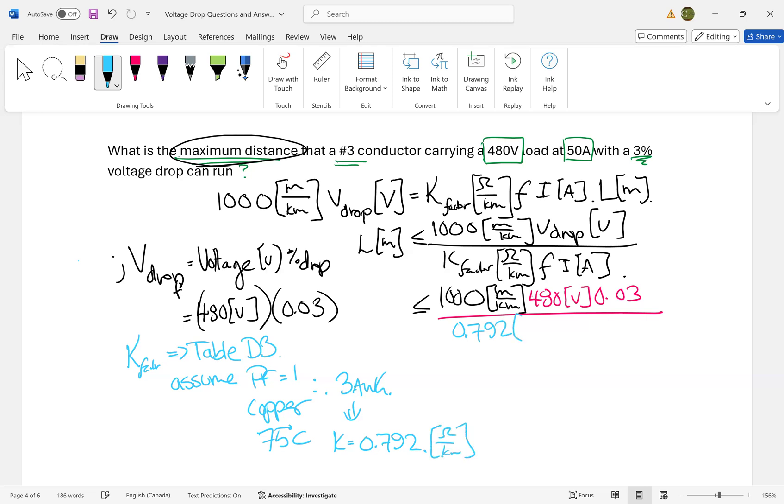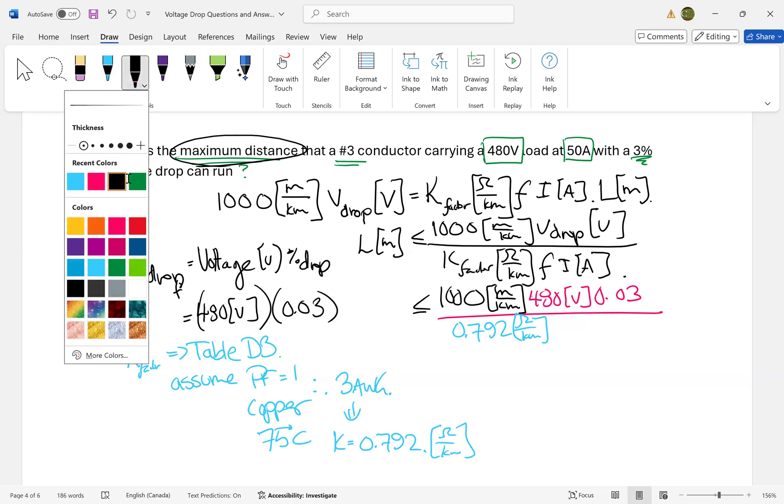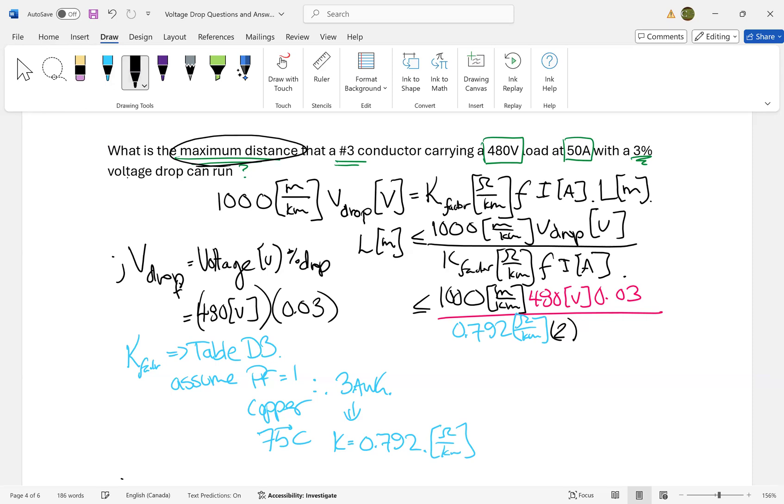Do not do calculations without units - units help you see if you're right or wrong. F = 2 from Table D3 Note 2, and we're operating at 50 amps. Calculating: 14,400 divided by 79.3. Checking units: meters and volts on numerator, kilometers and ohms per kilometer on denominator, times amps. Volts and amps equal ohms, kilometers cancel, leaving meters.